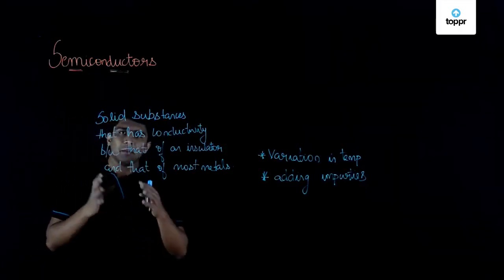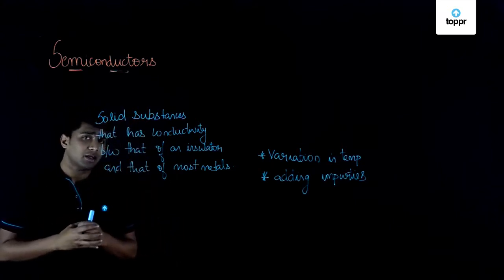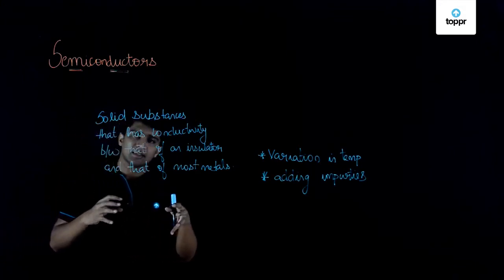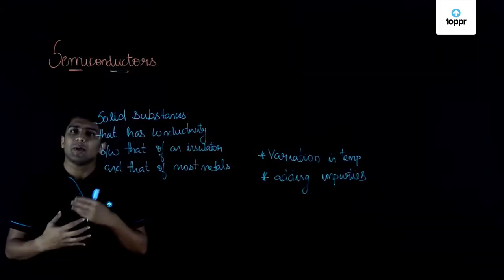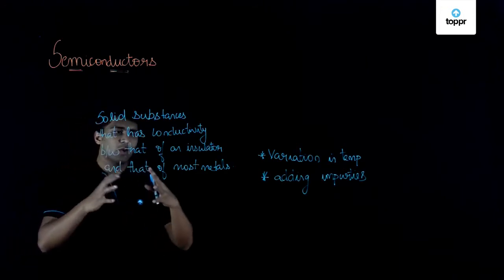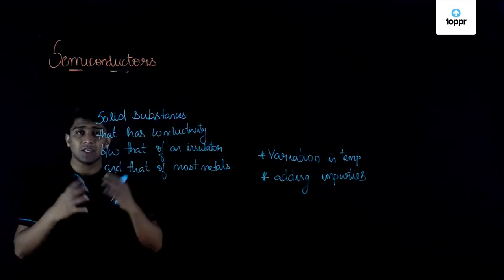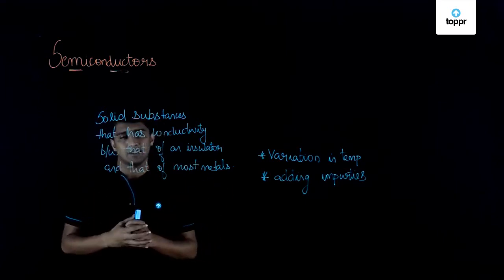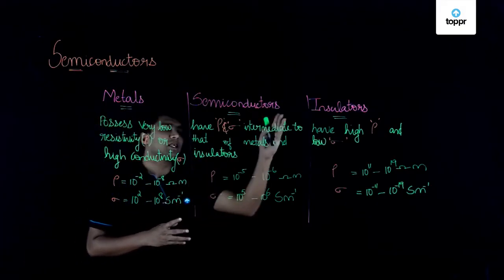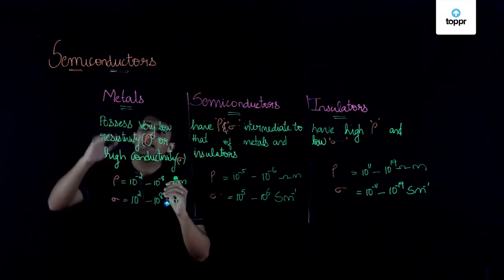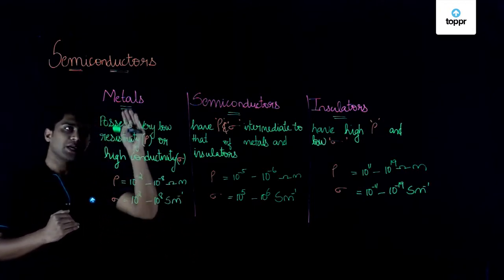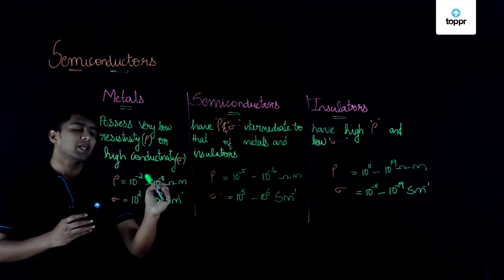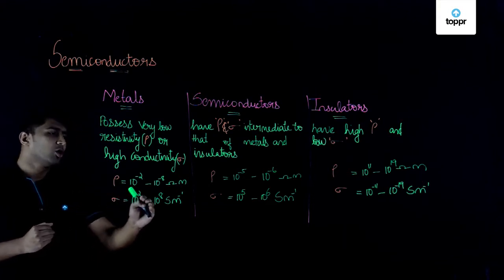Now let's classify materials as conductors, semiconductors, and insulators. The factors which classify them are conductivity and resistivity. Metals possess very low resistivity or high conductivity — the resistivity range of metals is 10⁻² to 10⁻⁸ ohm-meter, and conductivity is 10² to 10⁸ Siemens per meter.